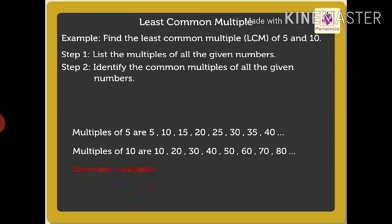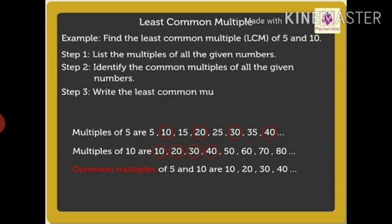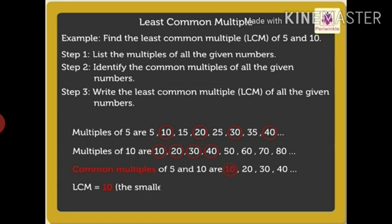Common multiples of 5 and 10 are 10, 20, 30, 40, and so on. Step 3: Write the least common multiple of all the given numbers. Here the least common multiple is 10. Thus, the LCM of 5 and 10 is 10, which is the smallest common multiple.